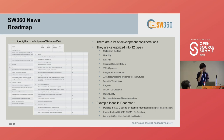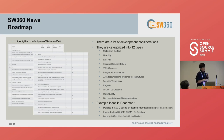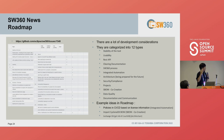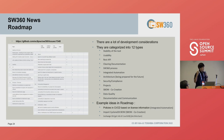For example, roadmap items include CI/CD integration based on license information, an automated function, support for CycloneDX SBOMs, and we are also now discussing how to change the database. Currently we are using CouchDB, but we are surveying which database would be most beneficial for our service.